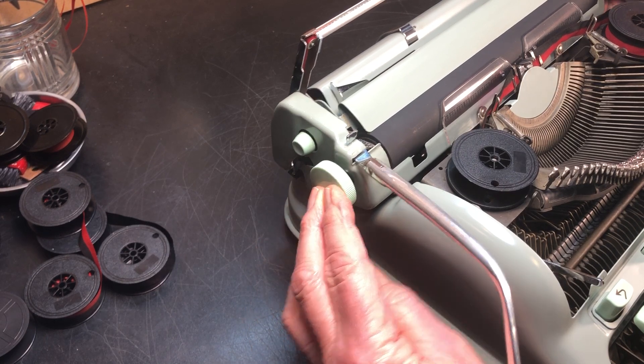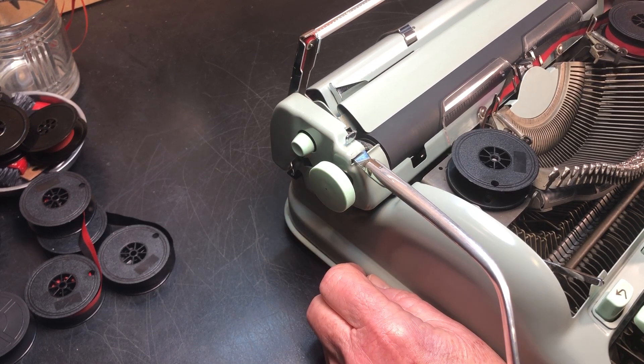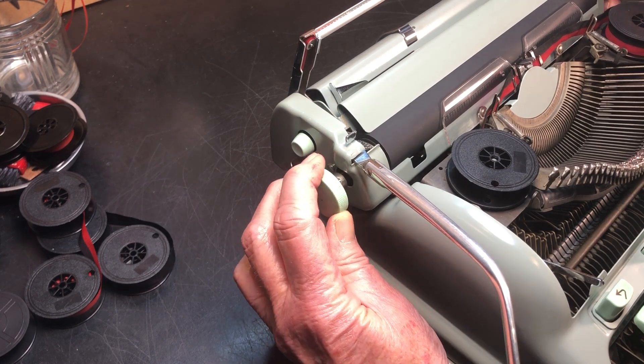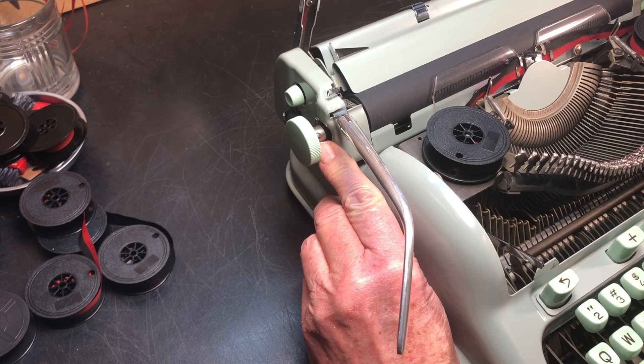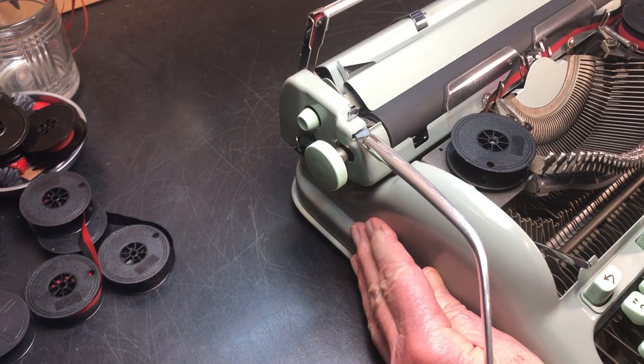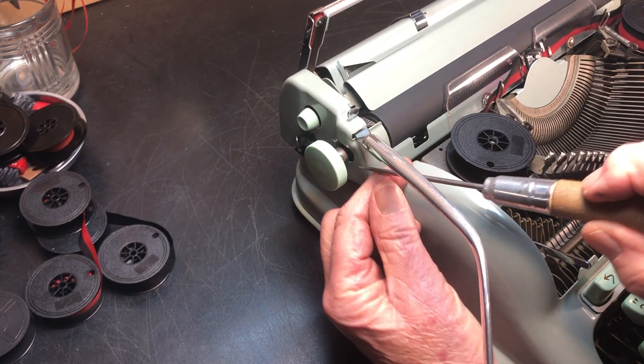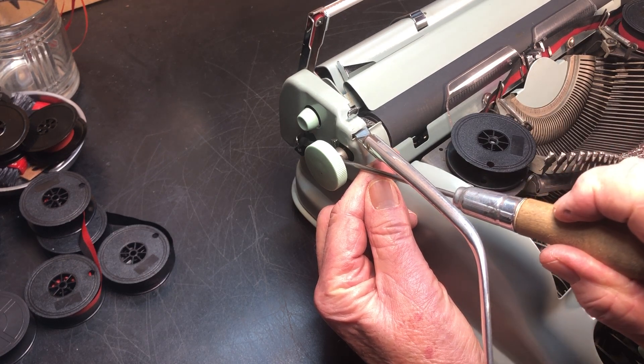Soft roll. Push it in. Detent. Now, the problem was that this screw right here came out. I'm going to take the screw out and show you how this works.